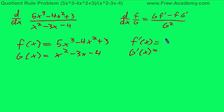See this will be 15x squared minus 8x plus 0. That's 0. g prime of x is 2x minus 3 minus 0.